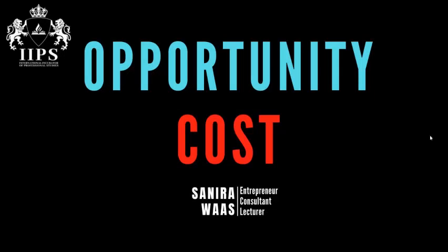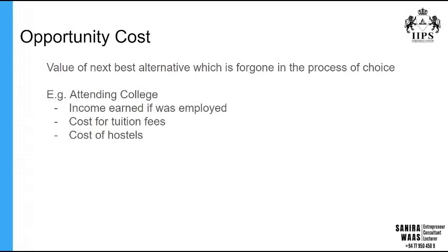Let's see what we have with this opportunity cost concept today. Opportunity cost is defined as the value of the next best alternative which is foregone in the process of choice. We know resources are scarce and every resource has multiple alternative uses — for example, time can be used for shopping, sleeping, or anything you wish. When resources have multiple alternative uses, you have to select the best alternative to satisfy your needs and wants. The value of the next best alternative which is foregone is identified as the opportunity cost.